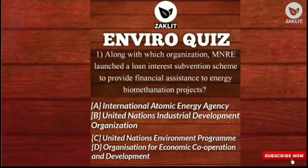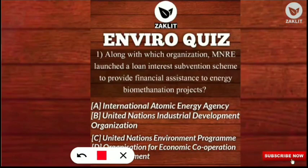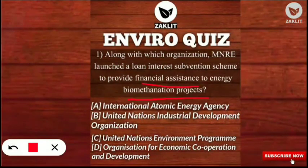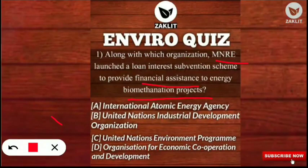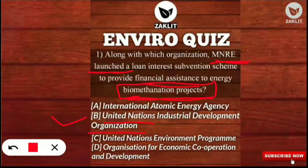The first question is: along with which organization did the Ministry of New and Renewable Energy launch a loan interest subvention scheme to provide financial assistance to energy biomethanation projects? The correct option is B — the United Nations Industrial Development Organization (UNIDO). MNRE, in collaboration with UNIDO, provides loans to organizations undertaking biomethanation projects to help the environment.